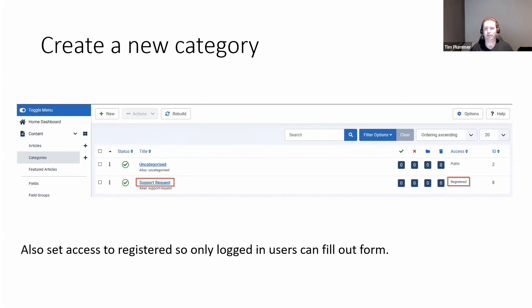The first thing we're going to do to build our application is create a new category — the same way you do it in Joomla 3. Click on the new button and give it a name; in this case I'm calling this category 'Support Request'. I'm also going to change the access to registered, so guests and anonymous users on the site can't access this category — only people logged into your site.